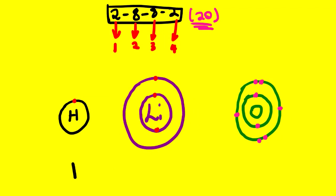The Lewis dot diagram of hydrogen shows one dot; for lithium, also one dot; and for oxygen, six dots representing its six valence electrons. To understand all these basics, make sure you watch the lesson videos in sequence — since this is Lesson 101, watch Lesson 102 next, as it continues from here. That is it for this lesson video. Thank you very much.